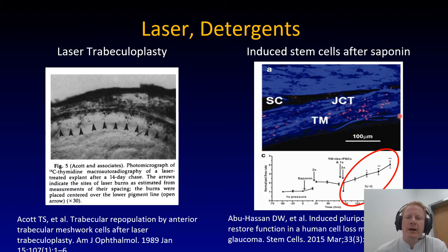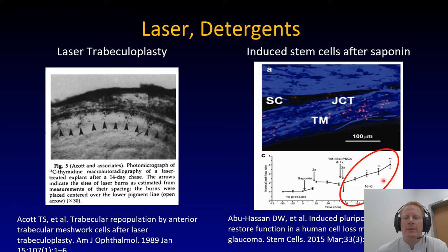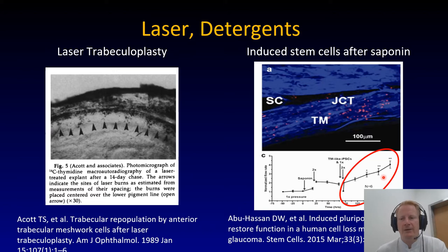This is a model by Abu Hassan where anterior segments were perfused with saponin, which has detergent-like properties and slightly damages the trabecular meshwork. This damage can be restored by infusing induced stem cells. You can see that the so-called homeostatic response is restored — usually when you increase pressure or increase the flow rate, there's a compensatory mechanism by the trabecular meshwork to get back to where it was before, by increasing outflow.